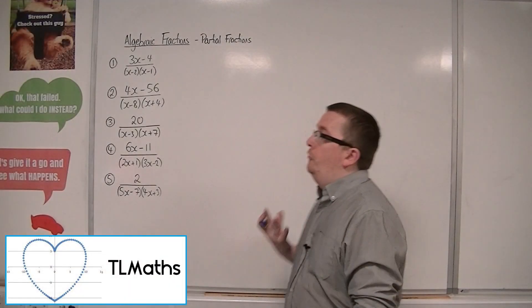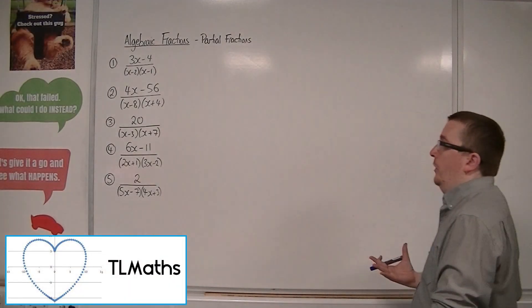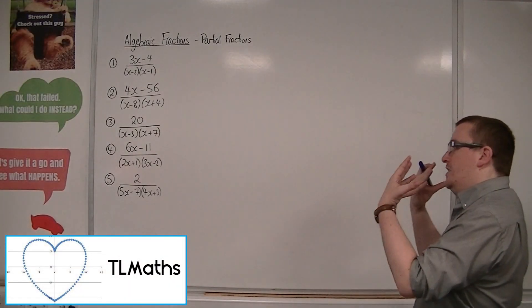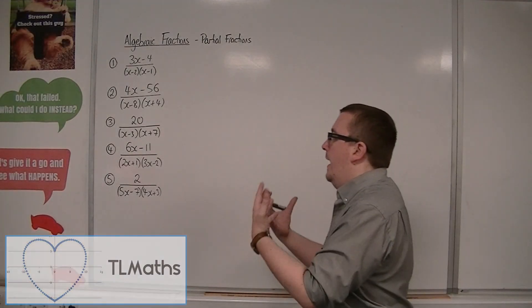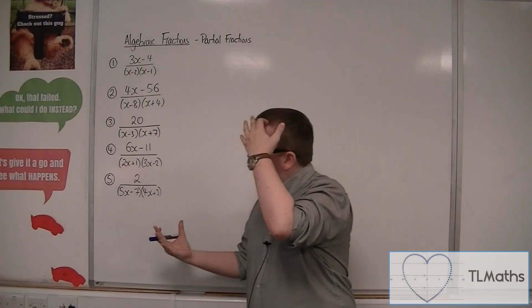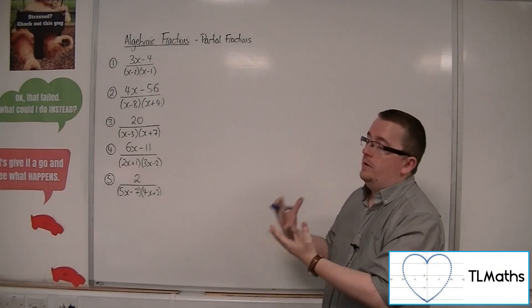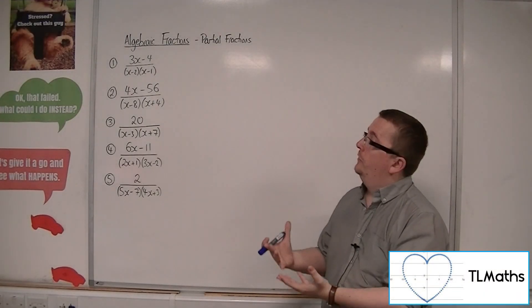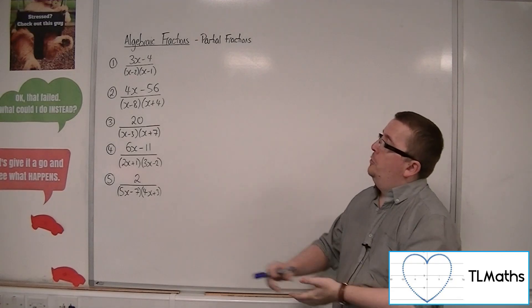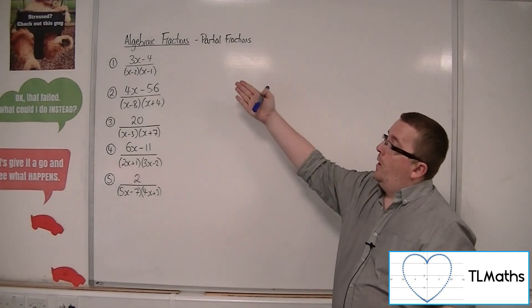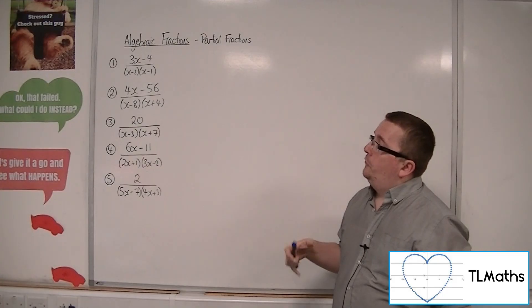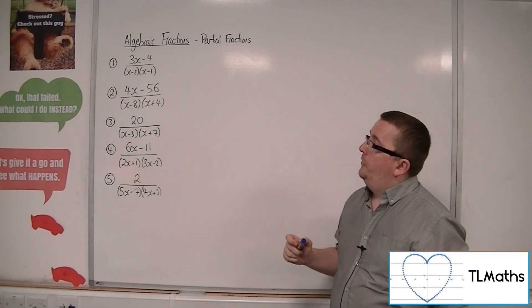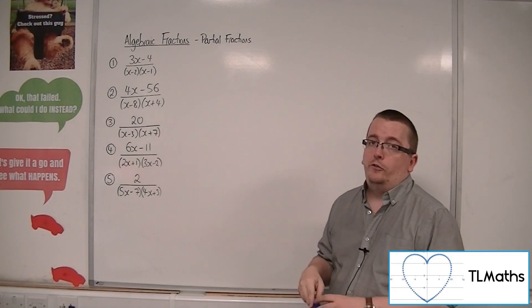In this video we're going to go through some examples of expanding an algebraic fraction into partial fractions. So, number 1: (3x - 4) over (x - 2)(x - 1).